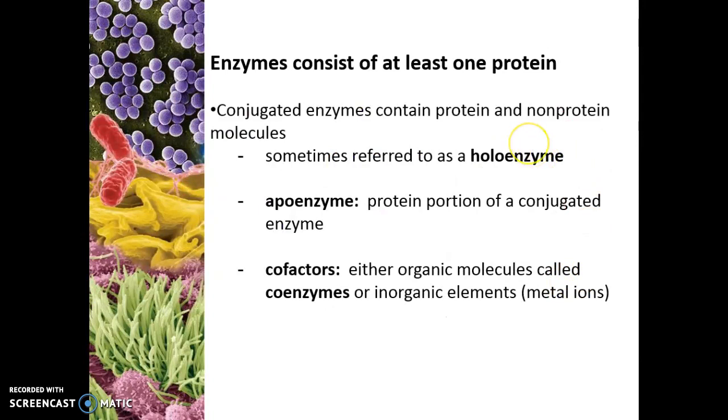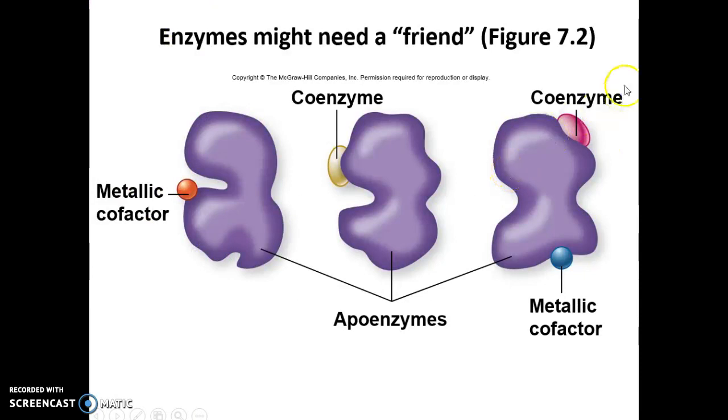All right, so this is just what we mentioned on the previous slide, defining apoenzyme and the cofactors. All right, holoenzyme. All right, this guy right here, or actually all of them, would be considered the holoenzyme. Because the enzyme as a whole needs the main component and then these cofactors in order to work.